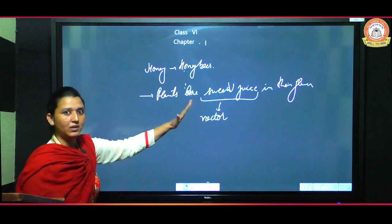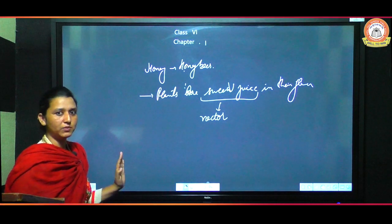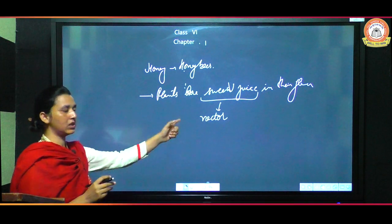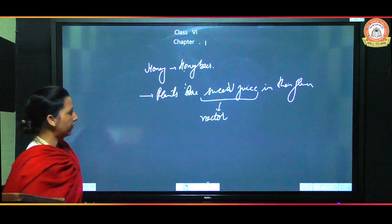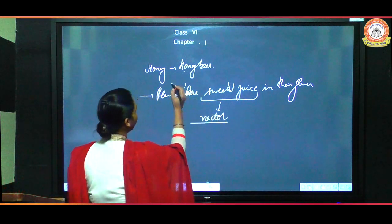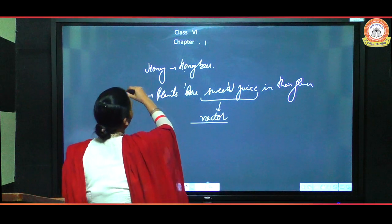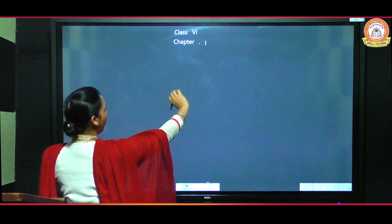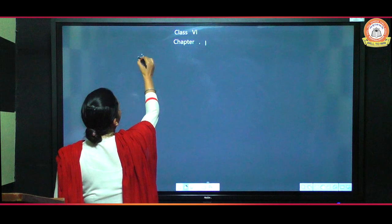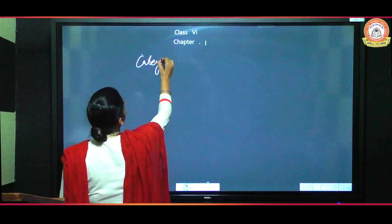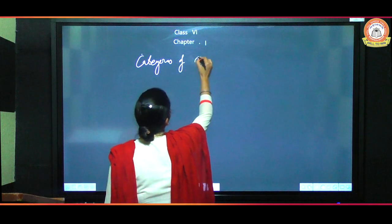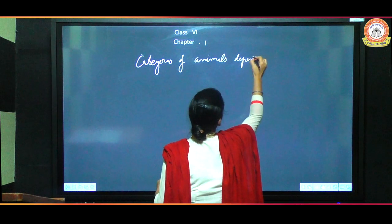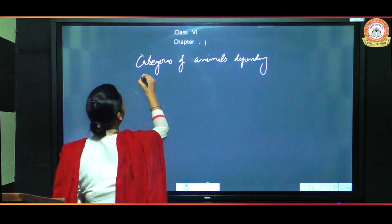After sucking the nectar from the flower, the honey bees store it in their beehives. Now I want to give an overview of the next topic — categories of animals depending on their food habits. Food habit means what an animal likes to eat. Depending on food habits, we can categorize animals into mainly three categories.